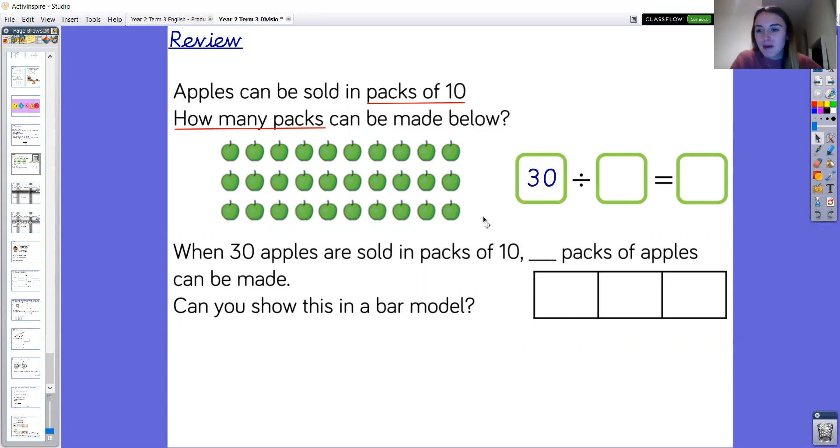And what are we dividing by year two? What is the divisor? Well done. We are dividing by 10. As we know from reading the question, looking at the key information, apples can be sold in the packs of 10. So shall we read our division so far? 30 divided by 10 equals, brilliant.